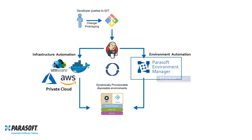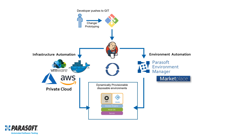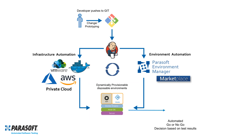Through Parasoft Environment Manager, we can deploy those dependencies directly into this application container, connecting the application to its dependencies. At that point, it's a simple process to execute all of our functional tests. We can then use the results from those tests to make an automated go or no-go decision.